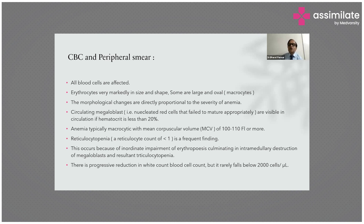Mean corpuscular volume is 100 to 110 femtoliters or more. Reticulocytopenia — less than 1% — is a frequent finding. This occurs because of inordinate impairment of erythropoiesis, culminating in intramedullary destruction of megaloblasts, resulting in reticulocytopenia.